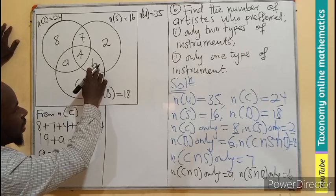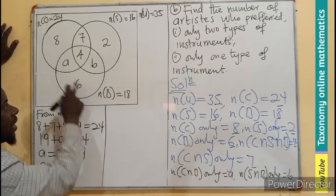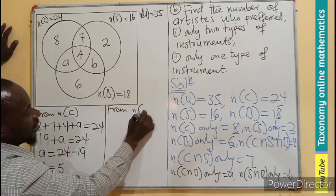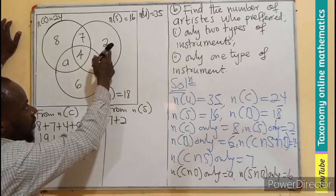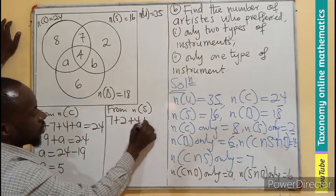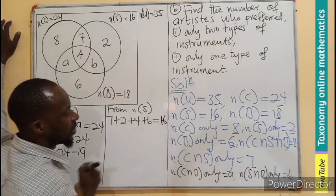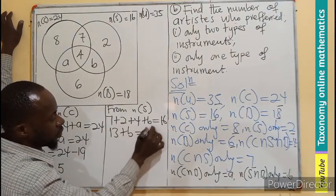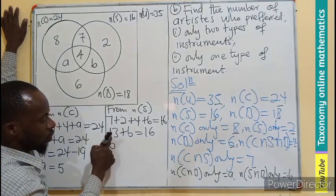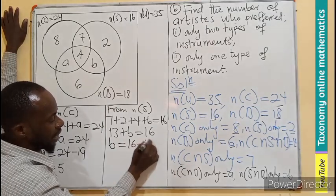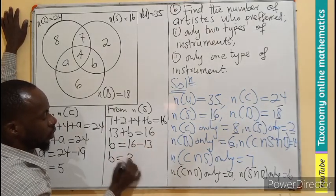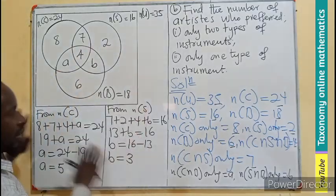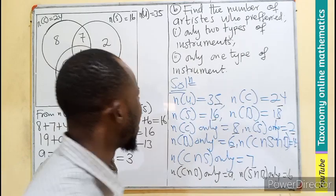Next, we find b by considering the saxophone circle, where all readings are now known. So: 7 + 2 + 4 + b = 16, which gives 13 + b = 16. Subtracting 13 from both sides: b = 3. So those who play saxophone and bongo only number 3.